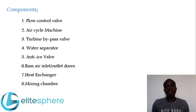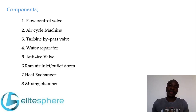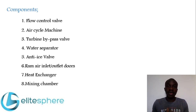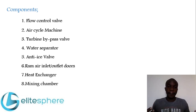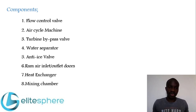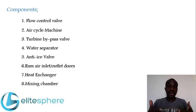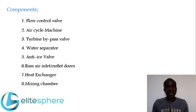The first function of the air cycle machine occurs at the compressor stage — the compression of the bleed air. Once the bleed air has moved from the flow control valve to the air cycle machine, it is compressed by the compressor. This compression causes an increase in temperature and pressure to the bleed air tapped from the engine. The compressor's only function is to compress the bleed air, raising its temperature and pressure.